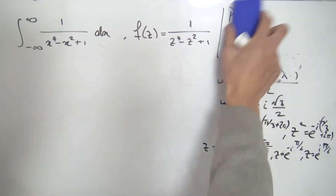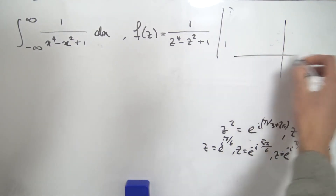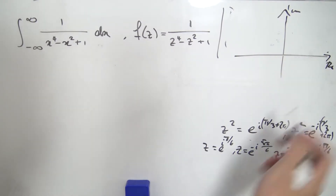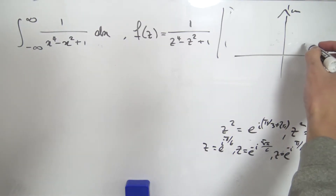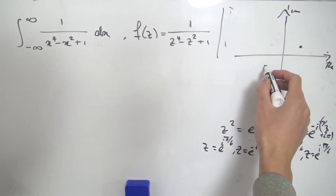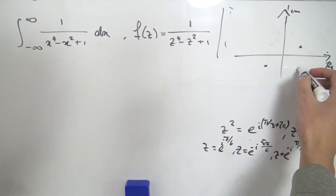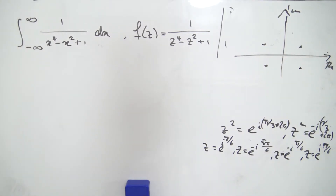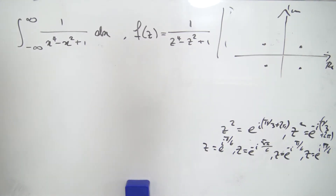Let's plot these poles in the complex plane. We have the imaginary axis and the real axis. Plotting each pole: e to the i pi over six is in the upper right, e to the minus i five pi over six is on the opposite side, e to the minus i pi over six is in the lower right, and e to the i five pi over six is on the upper left. They form a nice rectangular arrangement.